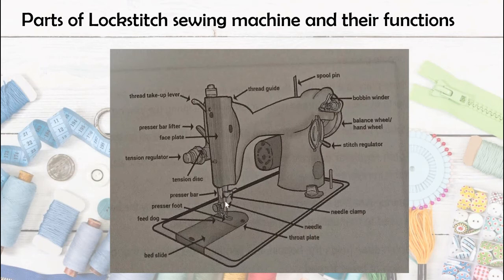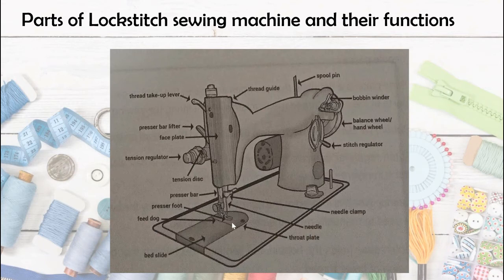The feed dog is situated directly underneath the presser foot and throat plate, moving the cloth forward while sewing. The feed dog has teeth-like ridges. Once you lower the presser foot onto the feed dog, it grips the fabric. When the feed dog activates, it runs forward, pulling the fabric ahead one stitch at a time.